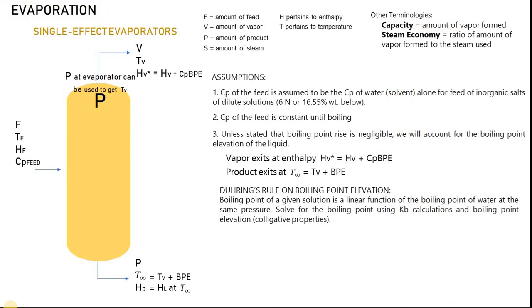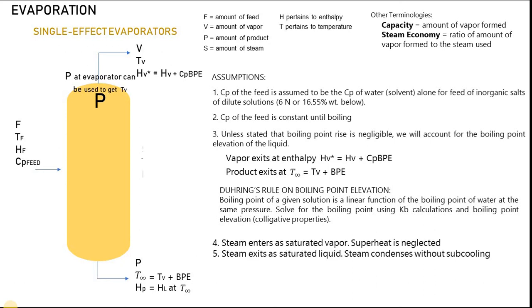The fourth and fifth assumptions are that steam enters as saturated vapor and superheat is neglected. Steam exits as saturated liquid and it condenses without subcooling.